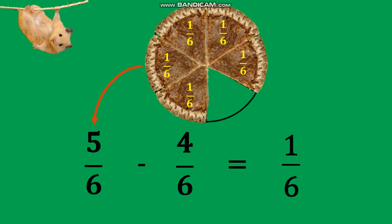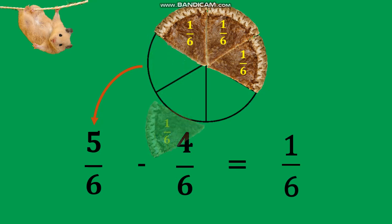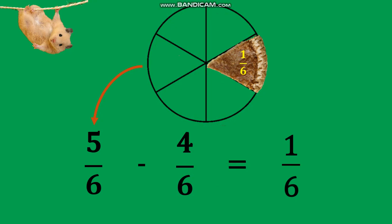To visualize, we take away or remove 4 one-sixth portions from 5 sixths. Then what will be left is only 1 sixth.